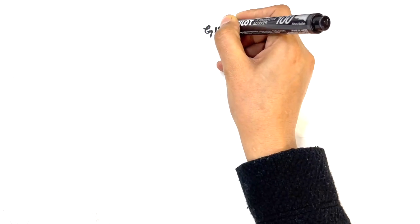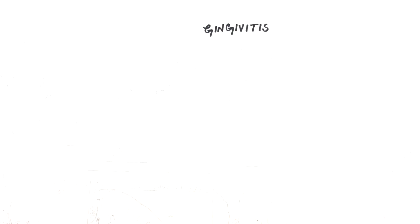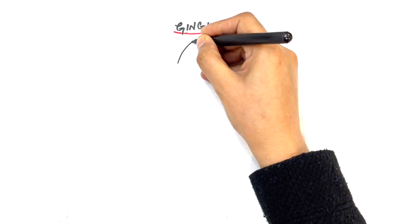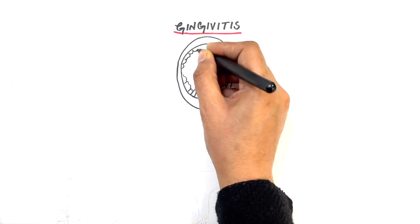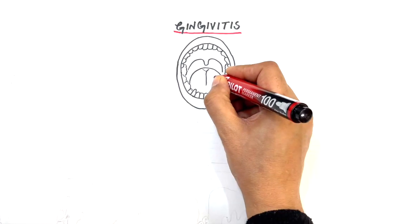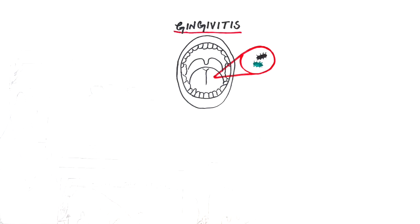So let's begin. The word gingivitis literally means inflammation of the gums. Gum disease is an infection caused by the harmful bacteria that live in our mouths. The human mouth is full of numerous types of bacteria, including beneficial and harmful bacteria.